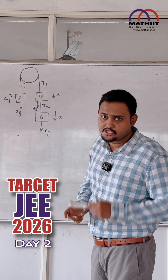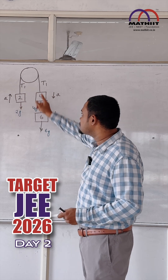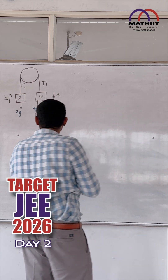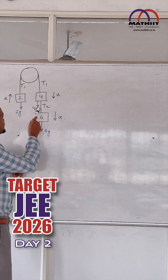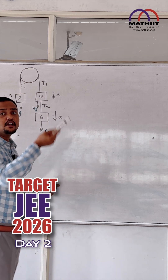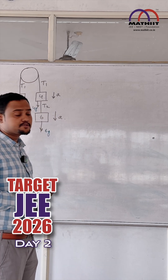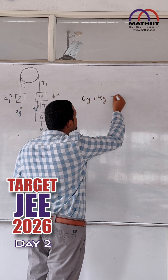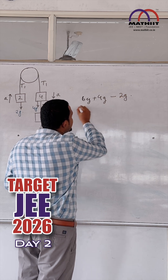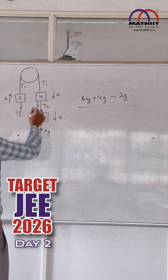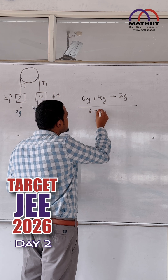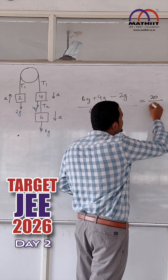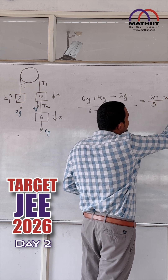Let us use the shortcut. How do we find the acceleration of the system? It is net force divided by total mass. So the net force is going to be 6g plus 4g minus 2g, because 2 kg is on the other side. This is 6g plus 4g minus 2g divided by the total mass, which is 6 plus 4 plus 2. This is going to be equal to 20/3 meter per second squared.